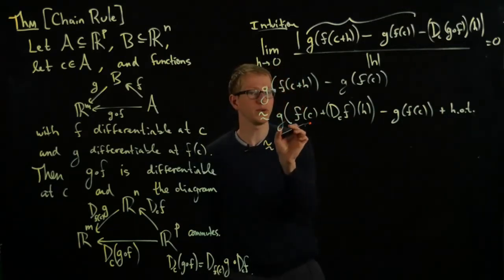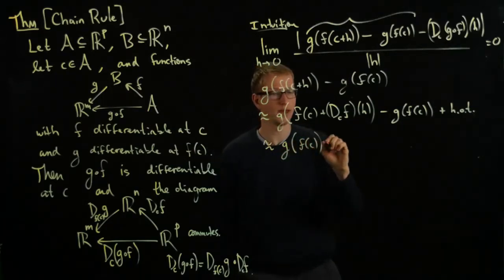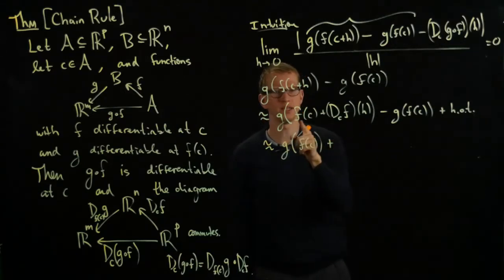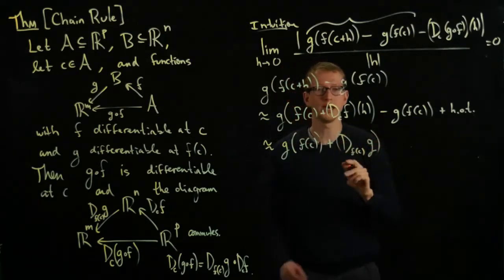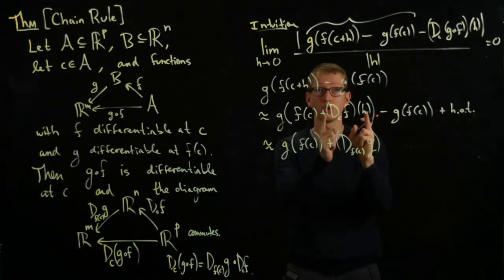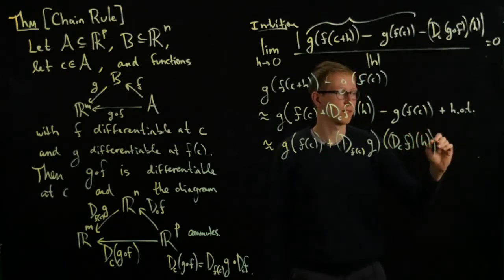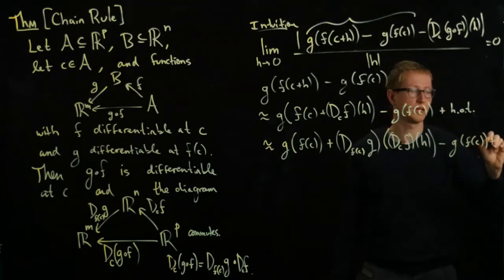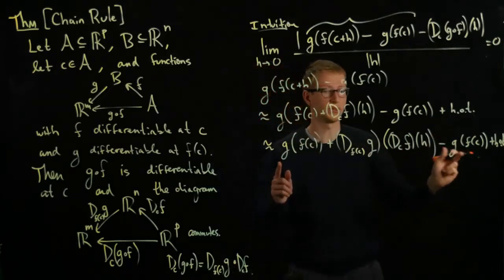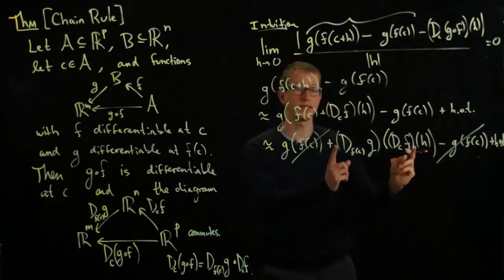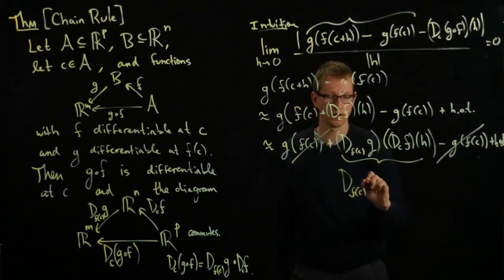We can approximate now using the fact that G is differentiable. We can approximate by taking the derivative of G at F(C) and then apply it to this vector—this is our new vector, our new H—minus G(F(C)) plus higher order terms. What do you notice? This term cancels with this term. When you look at this expression, if I rewrite this, this is nothing but D_{F(C)}G.